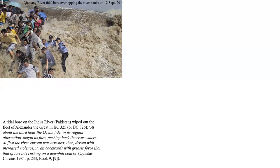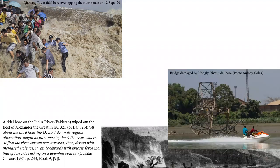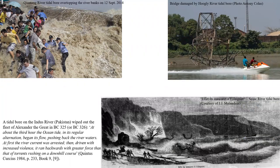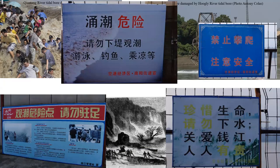The fleet of Alexander the Great was destroyed nearly 2,350 years ago. The tidal bore in China often overtops riverbanks, injuring and killing people. The bottom black and white engraving shows the sinister reputation of the tidal bore of the Seine River in western France, in Normandie. That bore killed thousands and sank 500 ships.